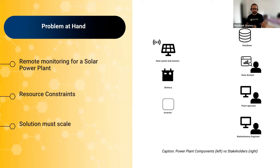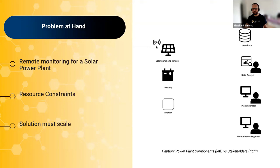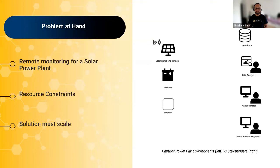Let's start by discussing the problem at hand — an actual IoT project. In our case, we are talking about a solar power plant. On one side, you have components such as solar panels, sensors that sense environmental conditions, a battery, and an inverter — the bare minimum to run a solar power plant. On the other side, you have stakeholders: someone controlling operations, a maintenance engineer, and a data analyst tracking KPIs like energy production and maintenance needs.